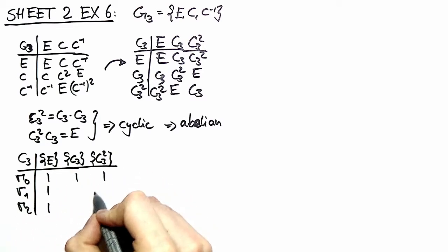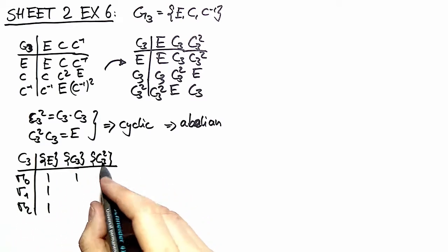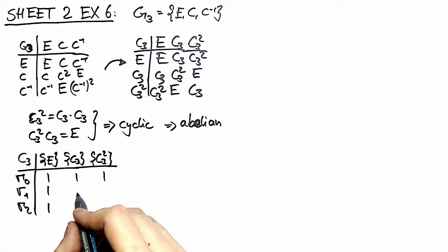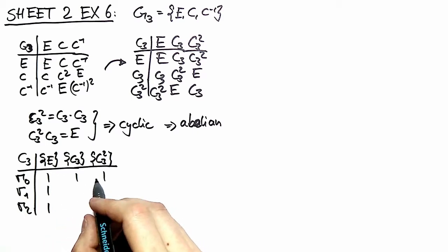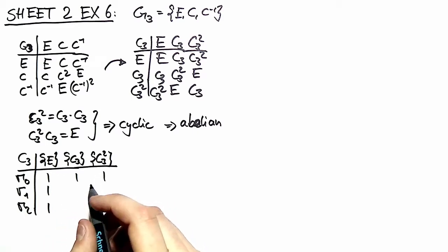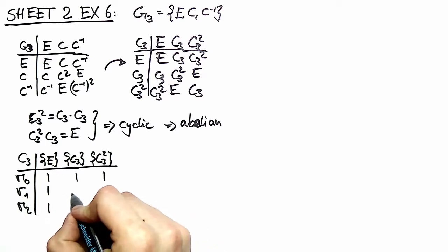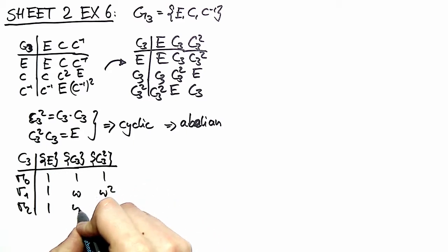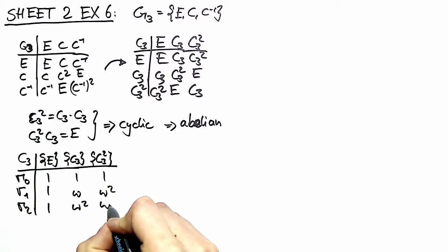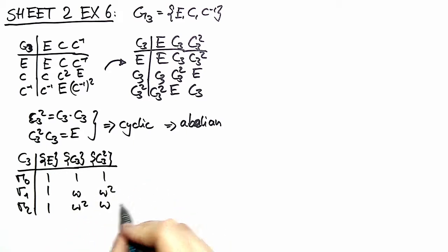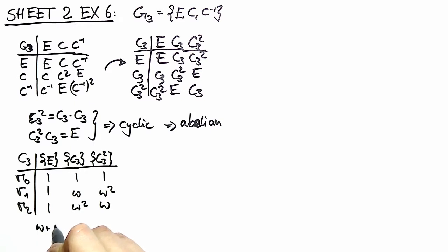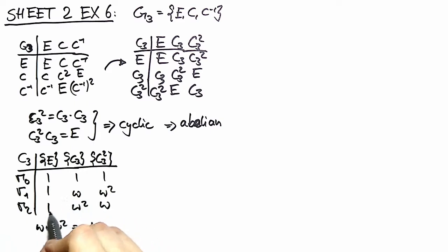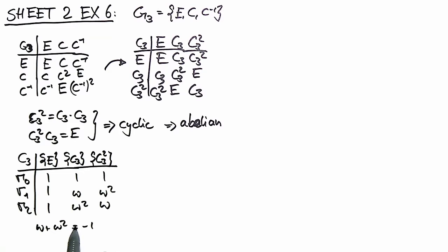We have the identity representation, and then we have a variable occurring — in fact we have two variables occurring, we call them omega and omega squared. We must have omega plus omega squared equal to minus one in order to fulfill row and column orthogonality.